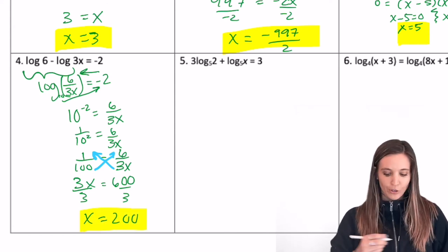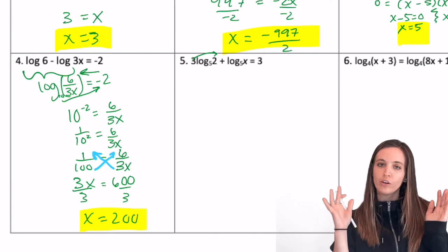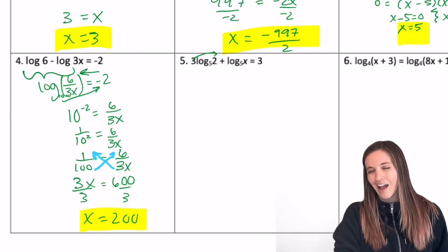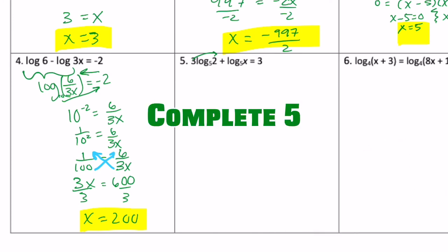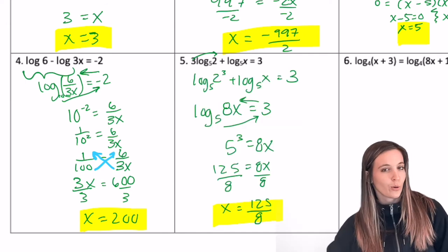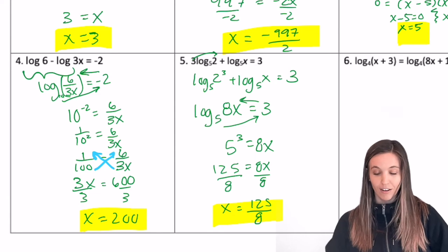Looking at 5. Remember, you got to undo the power before you can do the product and bring those logs together. I think you can solve this one. Do you get x equals 125 divided by 8? Awesome.